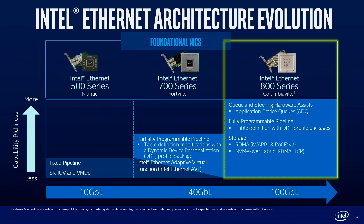Anytime we needed to make a change or add functionality, it would have to be a silicon spin. We moved to the 700 series — codename on the primary controller was Fortville. When we introduced that, we provided some additional programming. We put in firmware which allowed us to add additional capabilities over the life of the product. One of the things we added was a partially programmable pipeline, and we introduced technology called Dynamic Device Personalization, which allows us to insert additional protocol definitions into the pipeline.